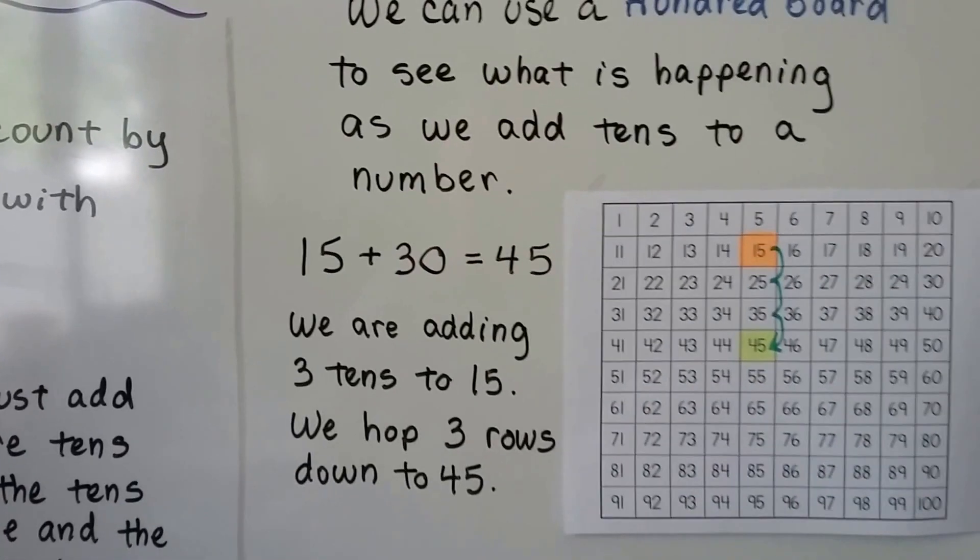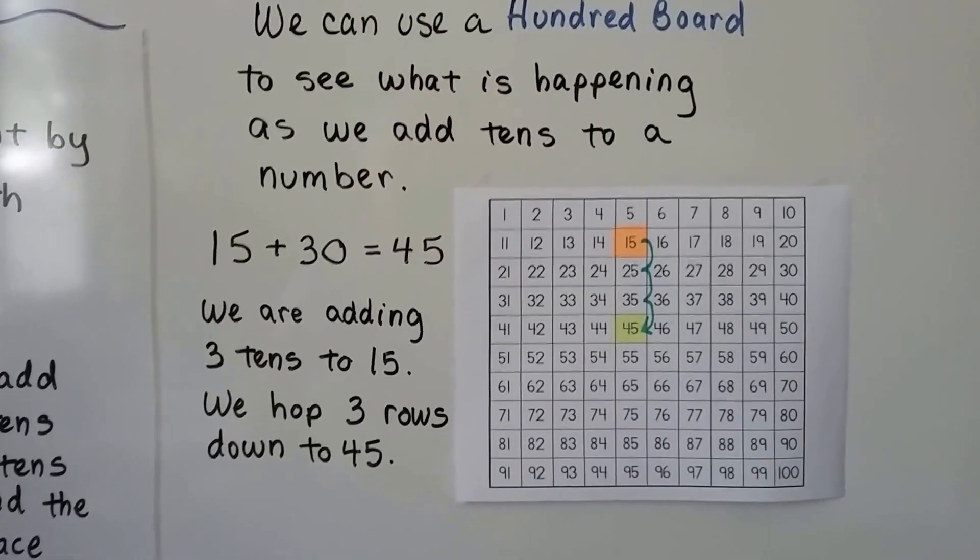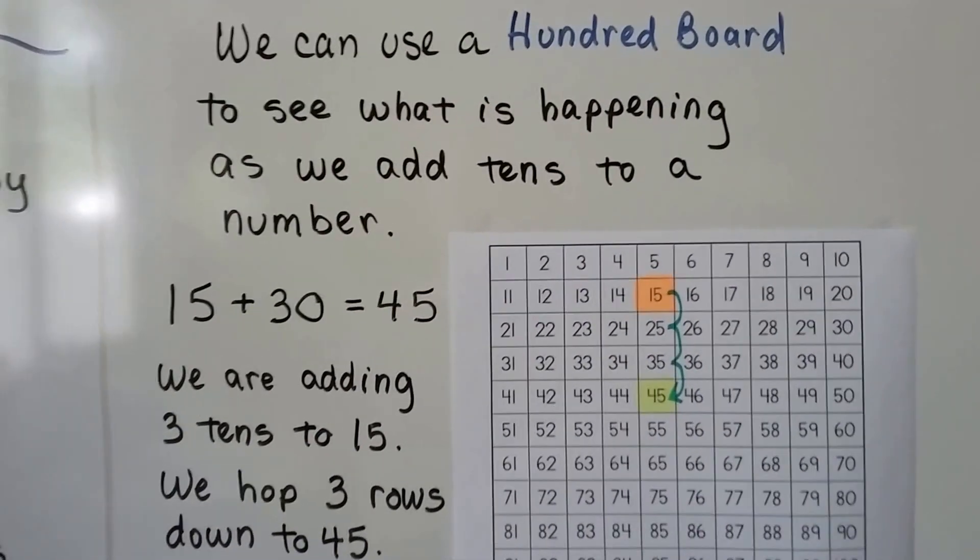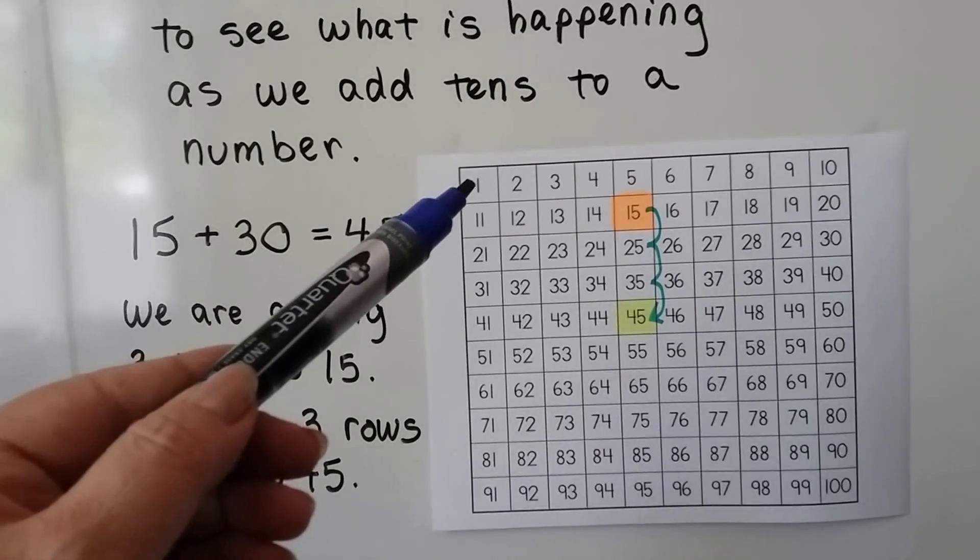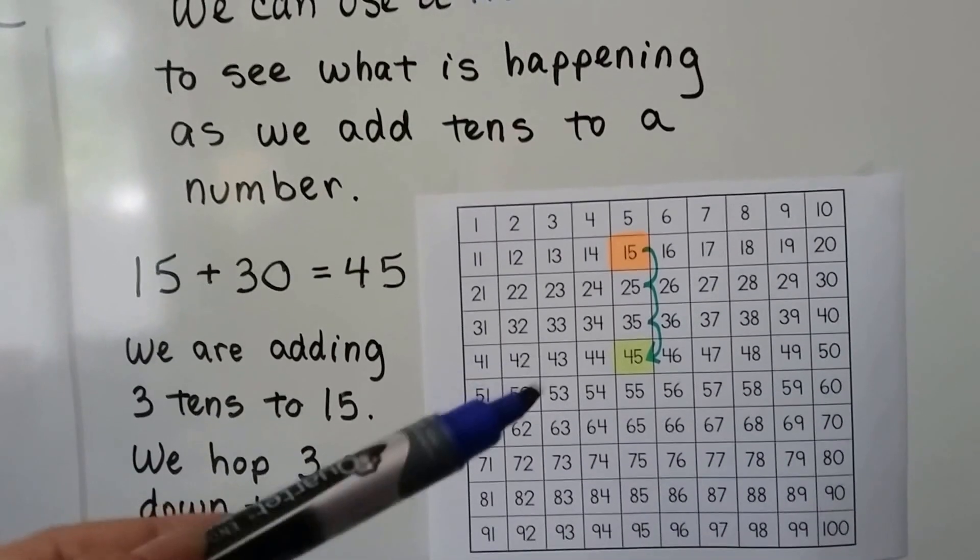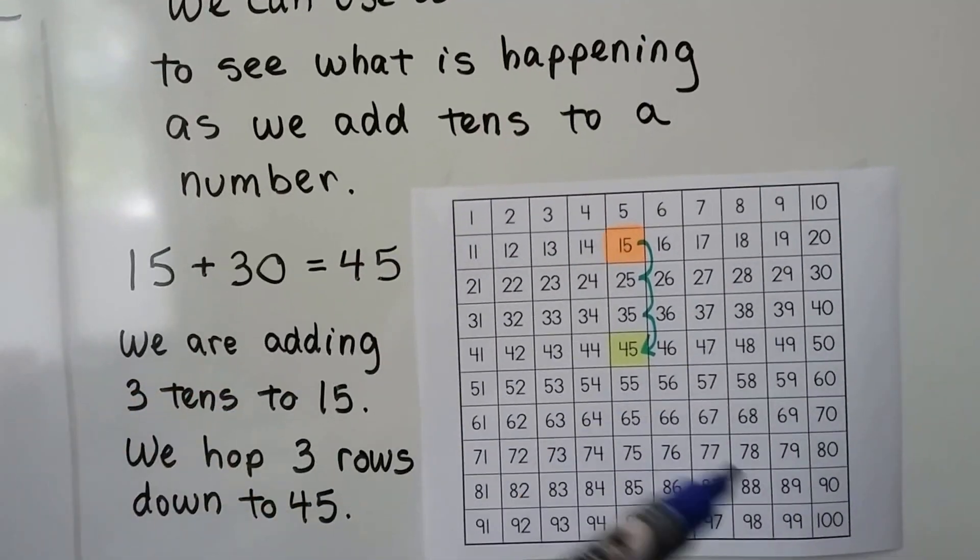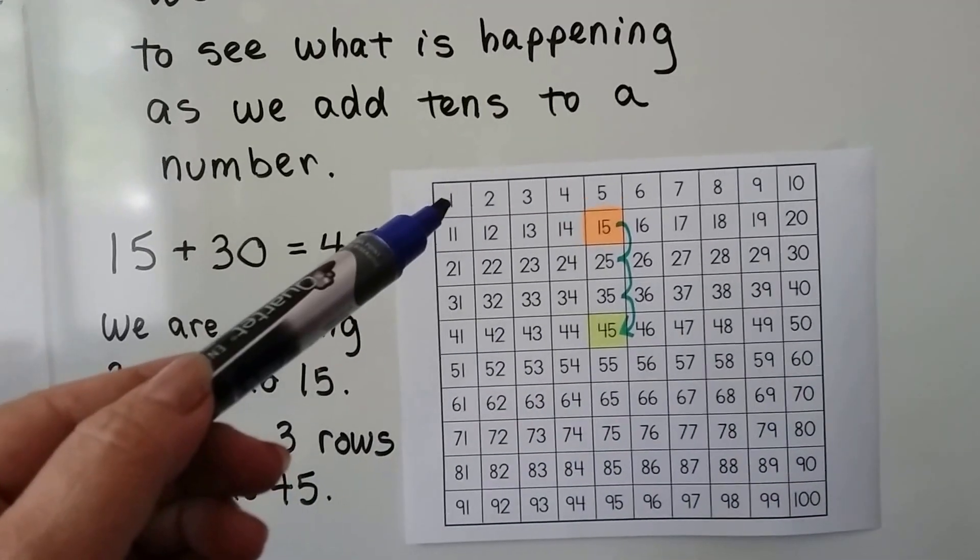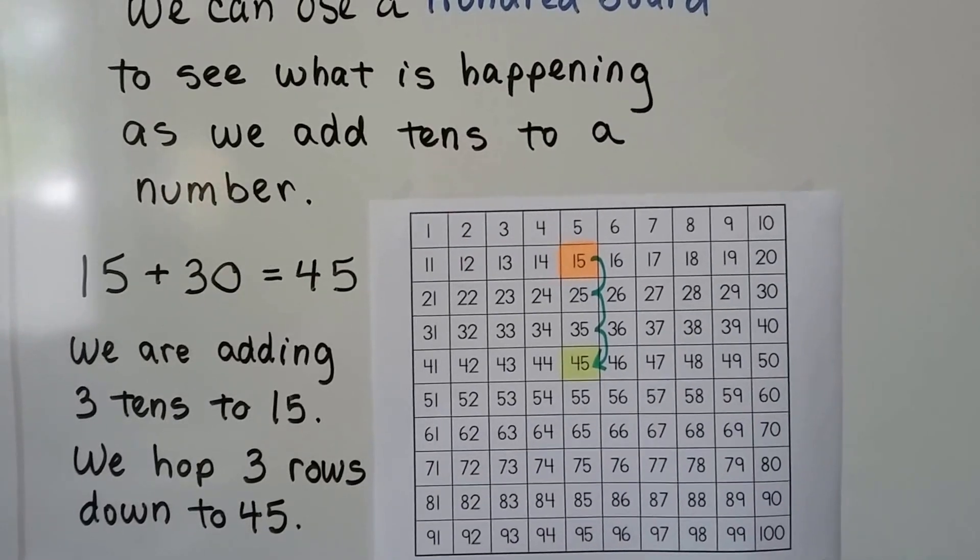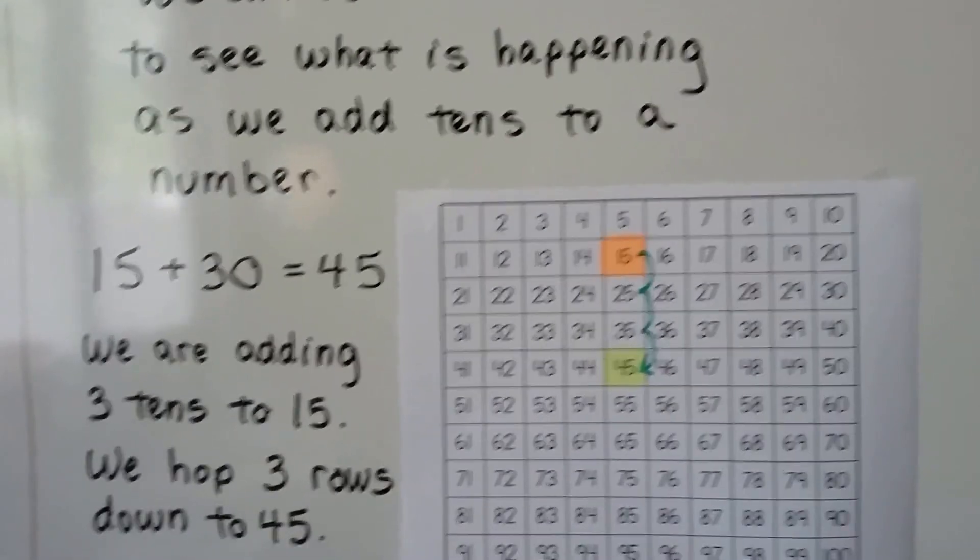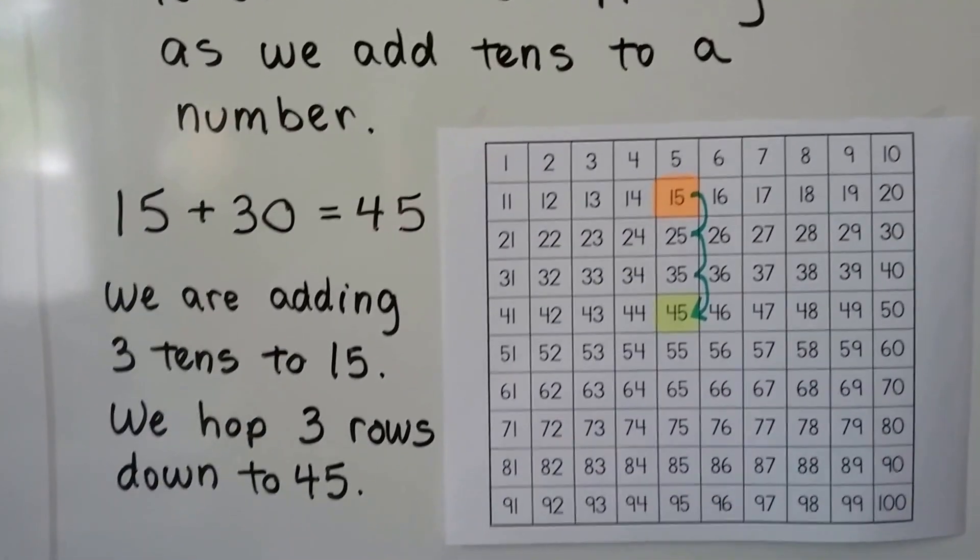We can use a hundred board to see what's happening as we add tens to a number. Now be careful. You know it's a hundred board if it starts with a 1 here. Some of these start with a 0 and go to 99. It has to start with a 1 and end with a 100 in order to be a hundred board.